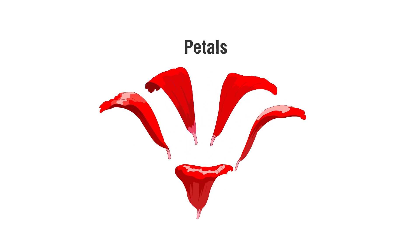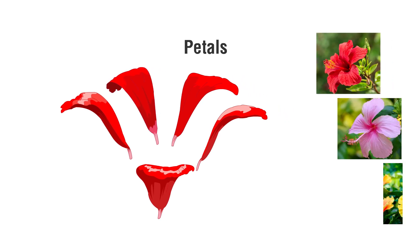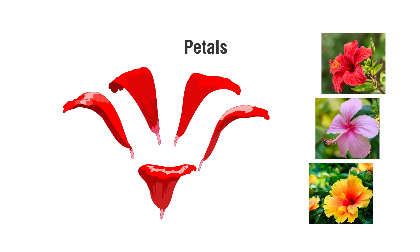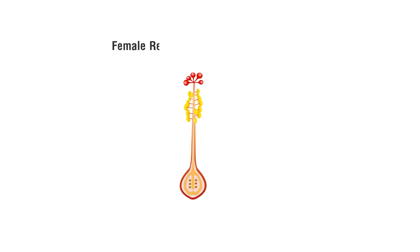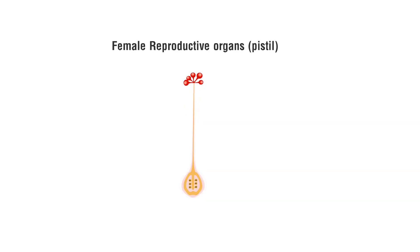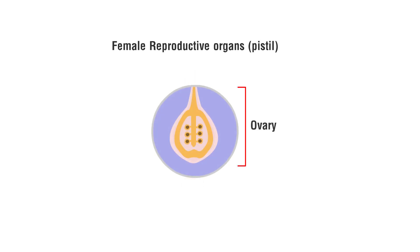Petals: Hibiscus has five petals which are together attached at the base. Every flower has multiple petals which differ in colour depending on the species. Female Reproductive Organs — Pistil: The pistil is a long tubular organ which is the female part of the flower. Its function is to produce seeds and ovary.